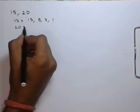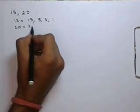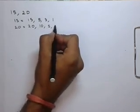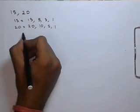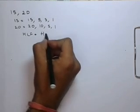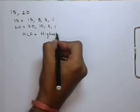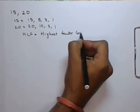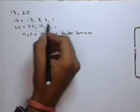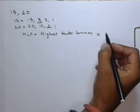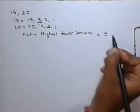Similarly, the factors of 20 are 20, 10, 5, and 1. The GCF is the highest factor common to both of them, and that is 5. So, the GCF of 15 and 20 is 5.